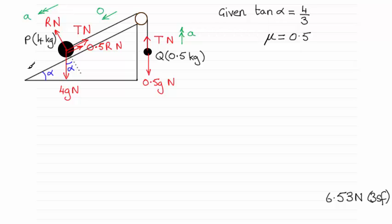And then I can resolve down the plane for P, always in the direction of motion. And then I will be able to create an equation with the tension and the acceleration in. I can then go to Q. Resolve upwards in the direction of motion. Get another equation for tension and acceleration. And then solve those two equations simultaneously to get that tension. So that's the method.